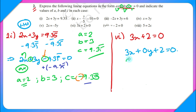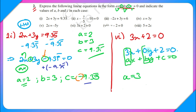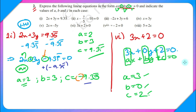By direct comparison of 3x + 0y + 2 = 0 with ax + by + c = 0, we get a = 3 (positive, no sign difference), b = 0 (because there is no y variable), and c = 2 (positive, no minus sign). Similarly, if there is no x term in an equation, you would add 0x.